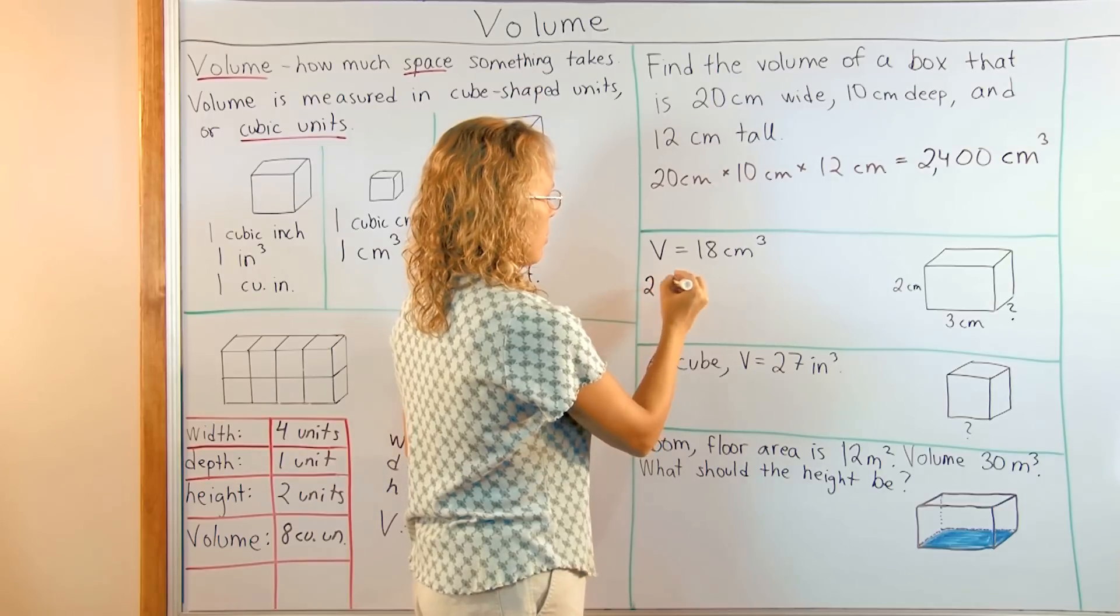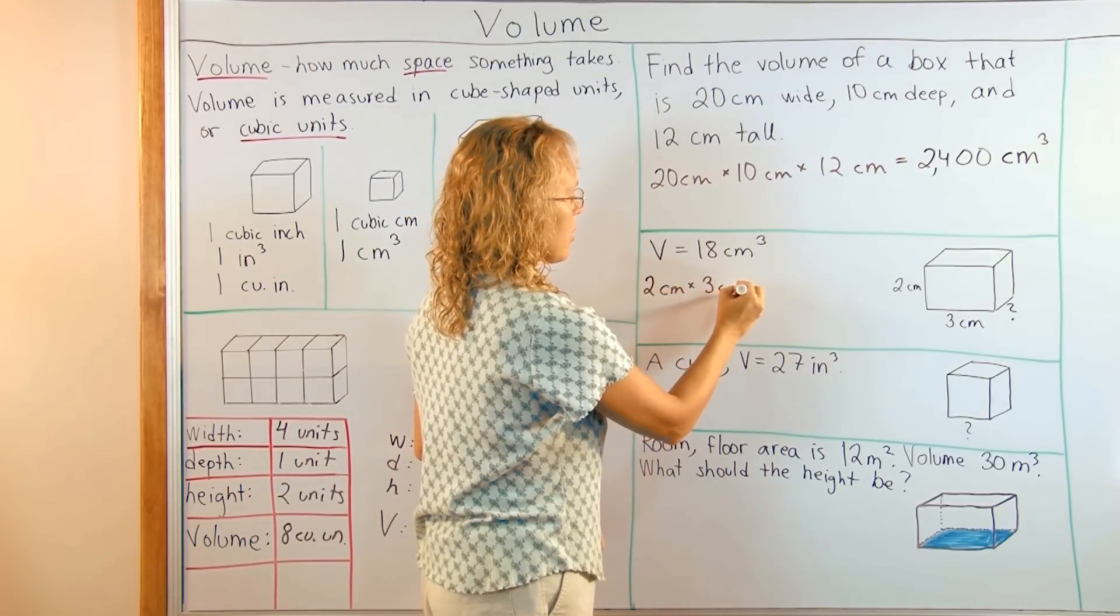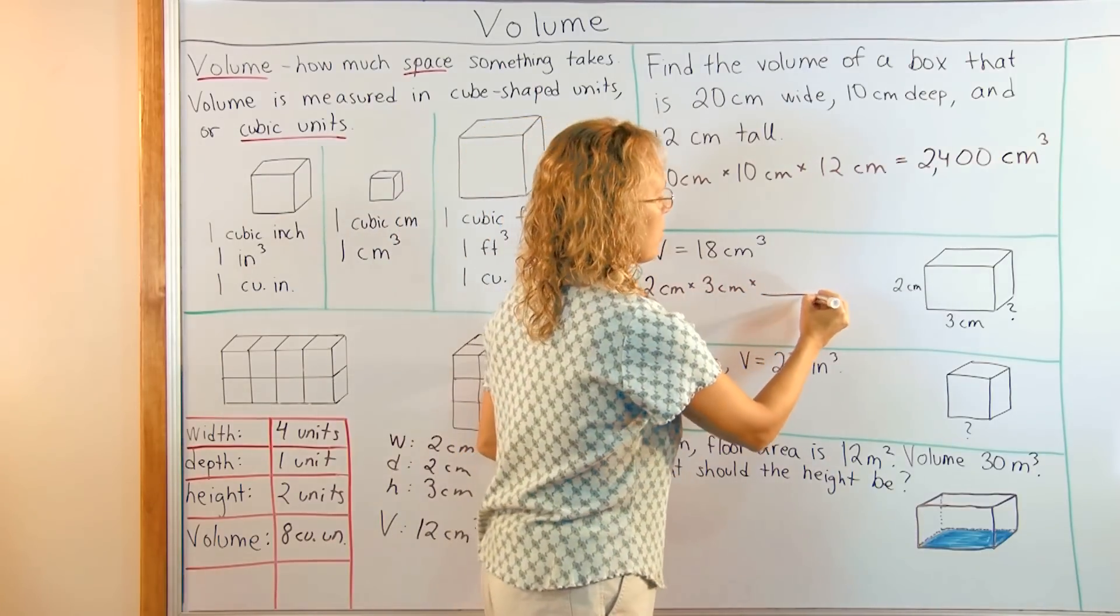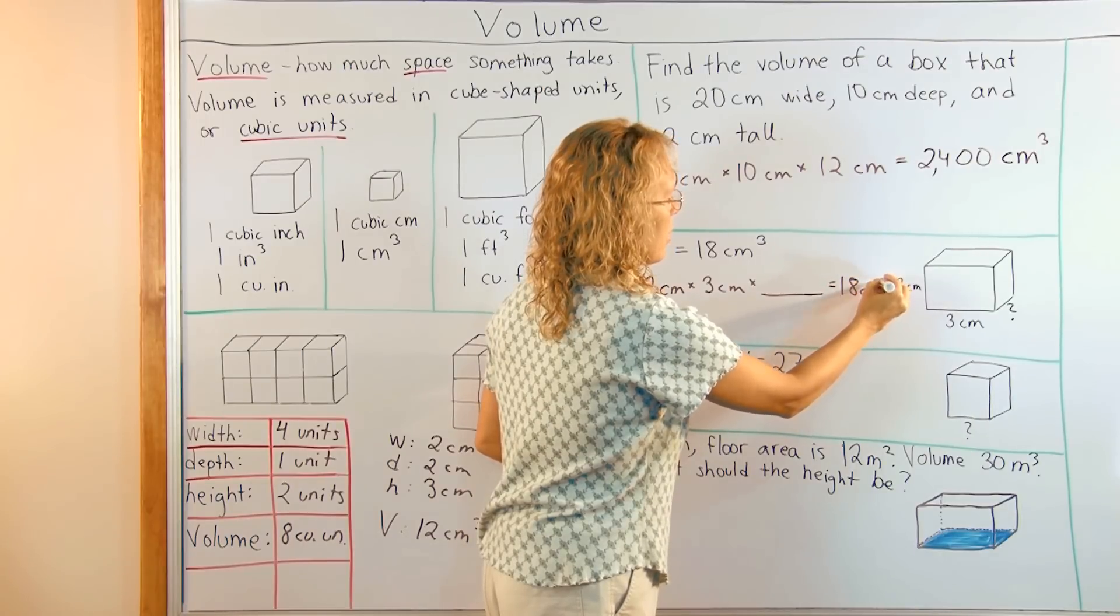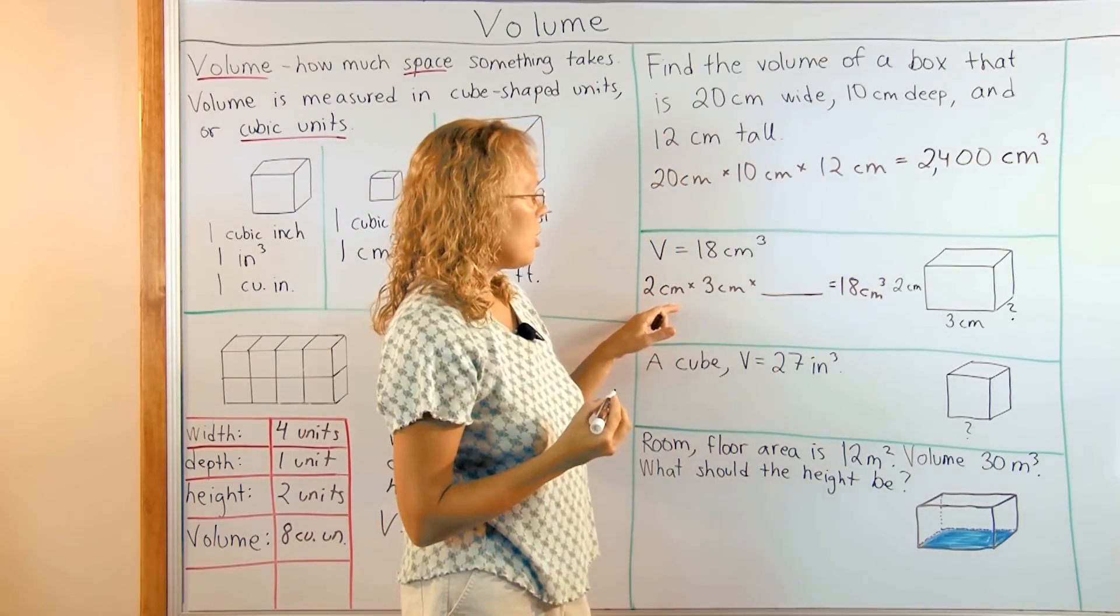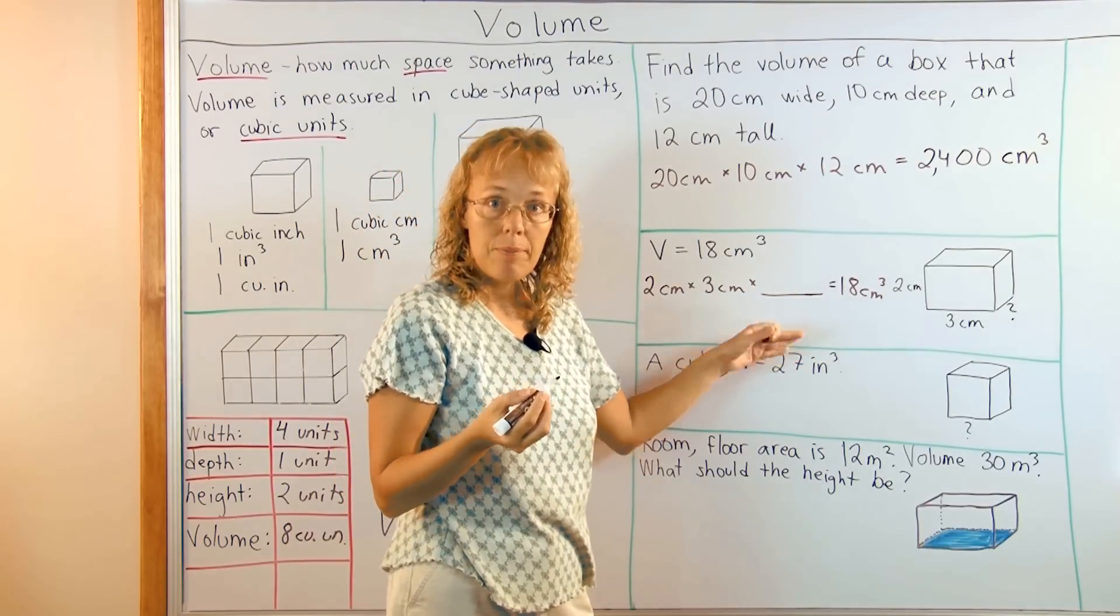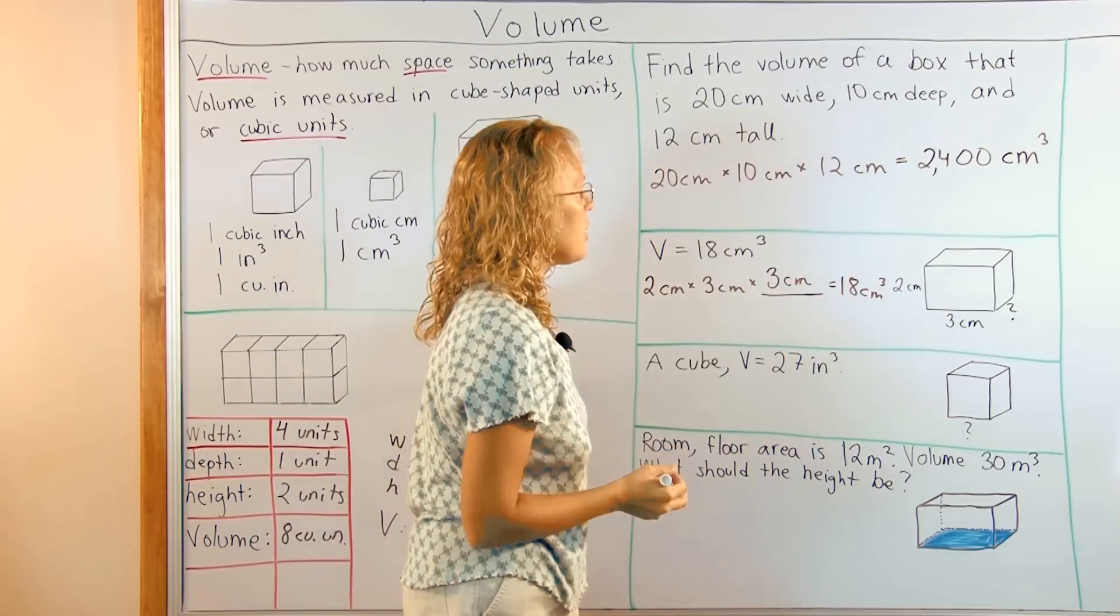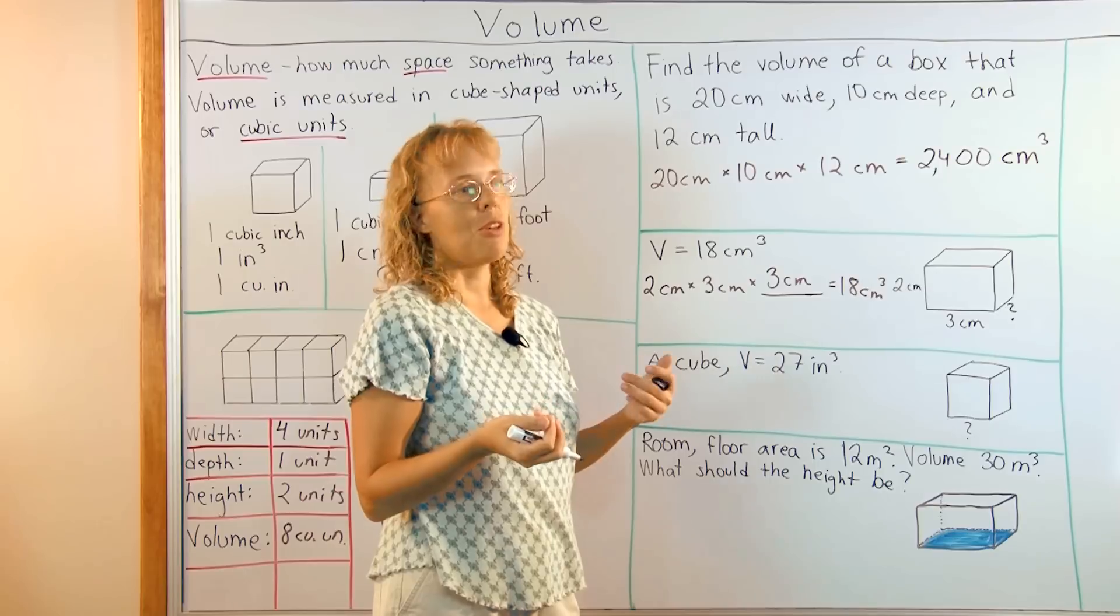Two times three times this number is eighteen, right? Let me write here. Two centimeters times three centimeters times the depth that we don't know. So that has to equal eighteen cubic centimeters. So simply two times three is six. And so six times what is eighteen? The answer is three centimeters. Okay? So it's an easy problem in that sense. But children need to notice that it is not asking for the volume. You do not multiply eighteen times two times three. But you think in reverse so to speak.